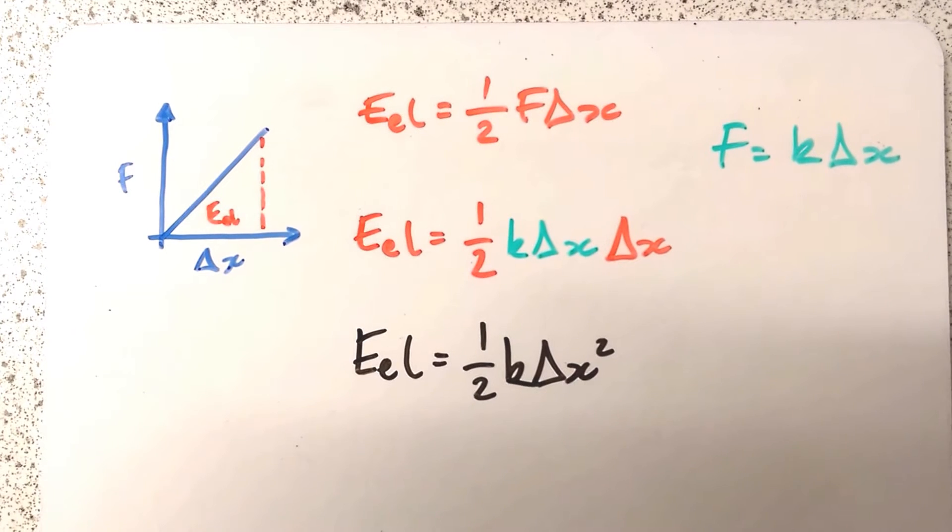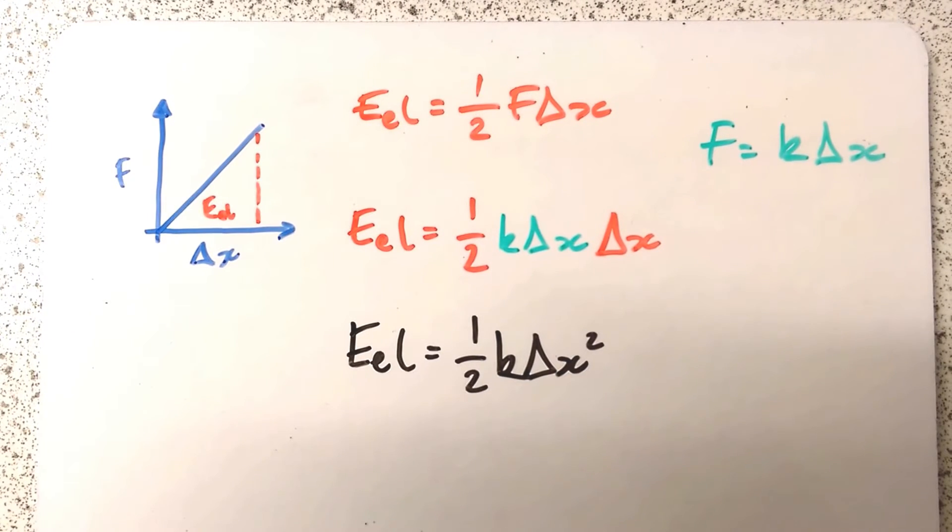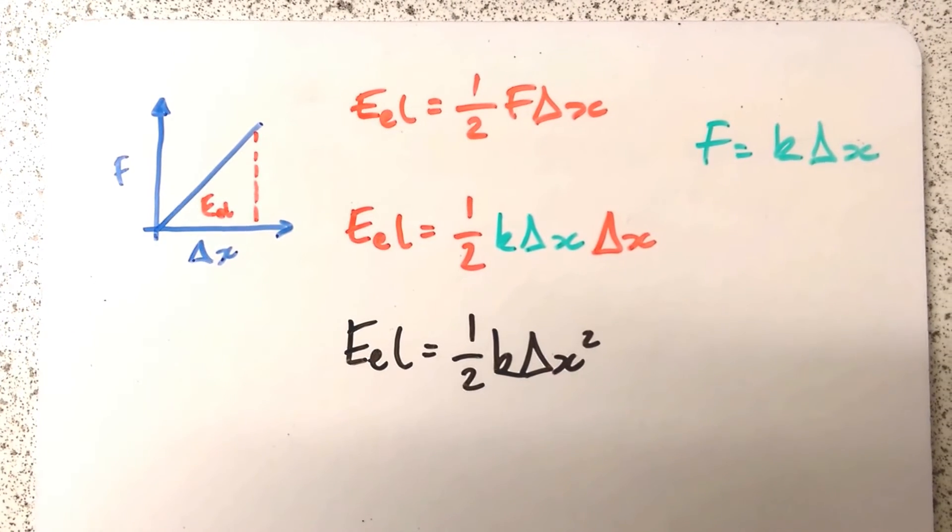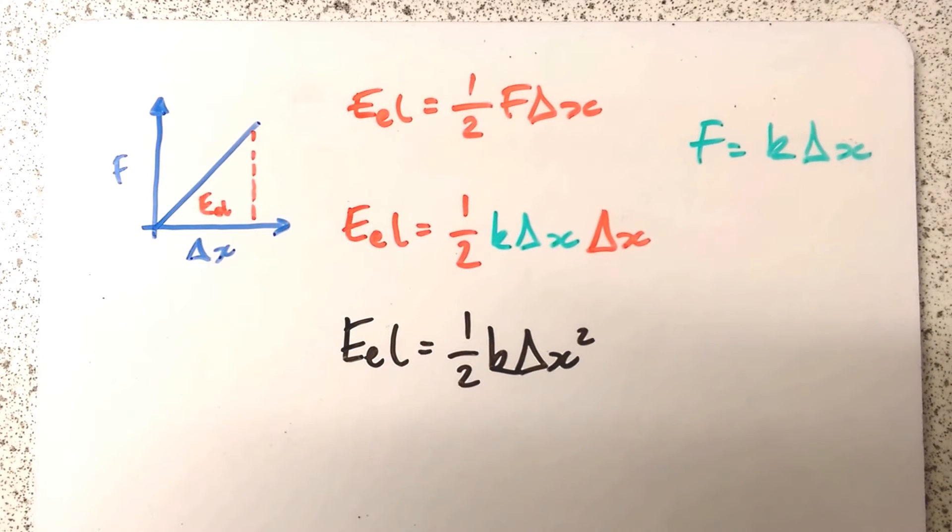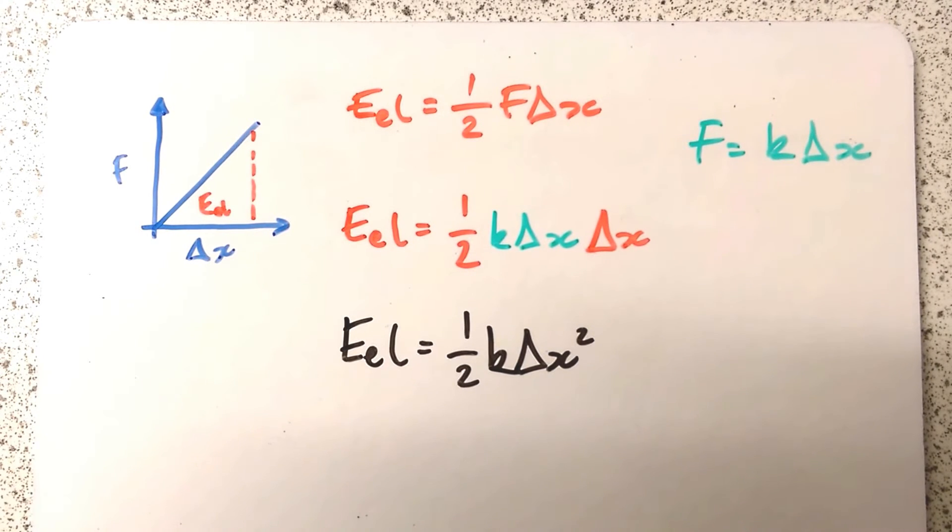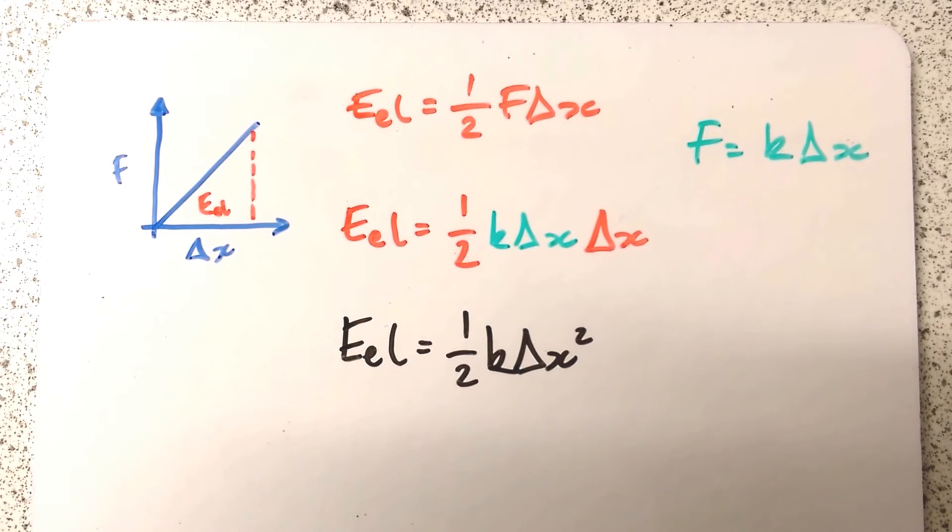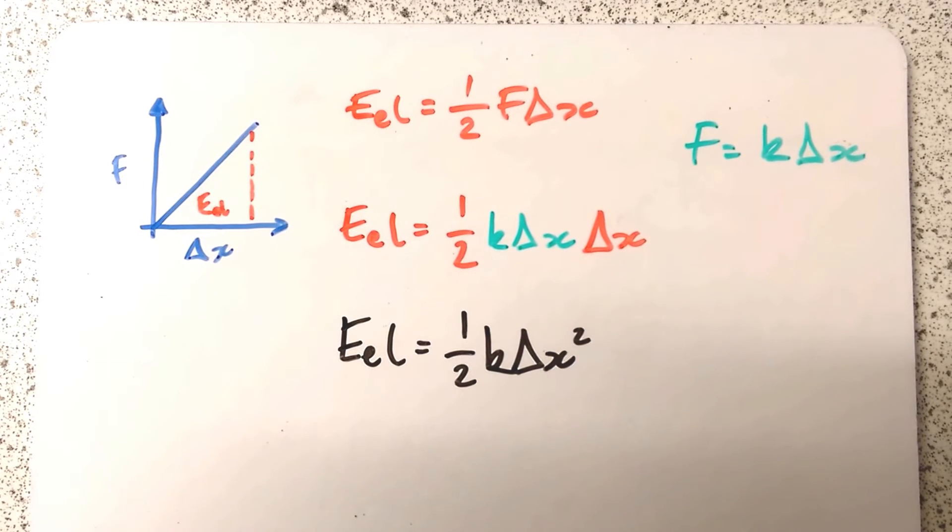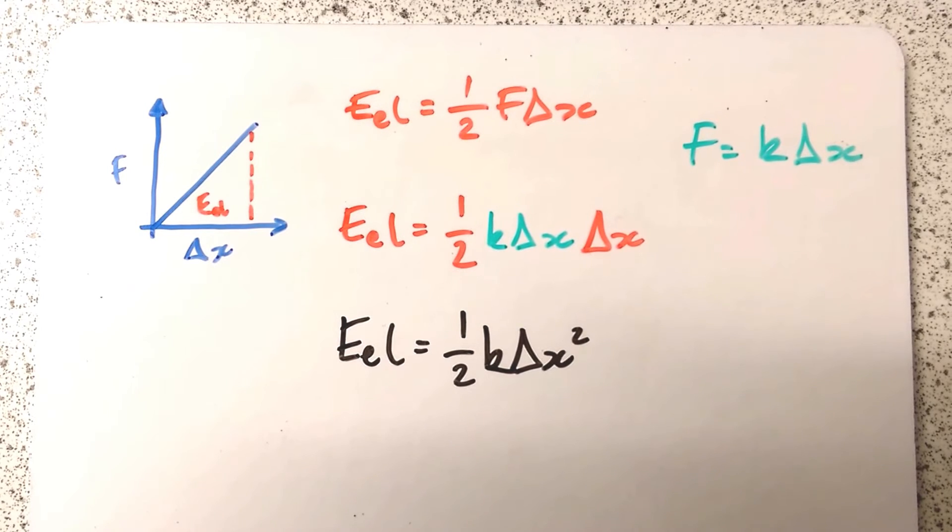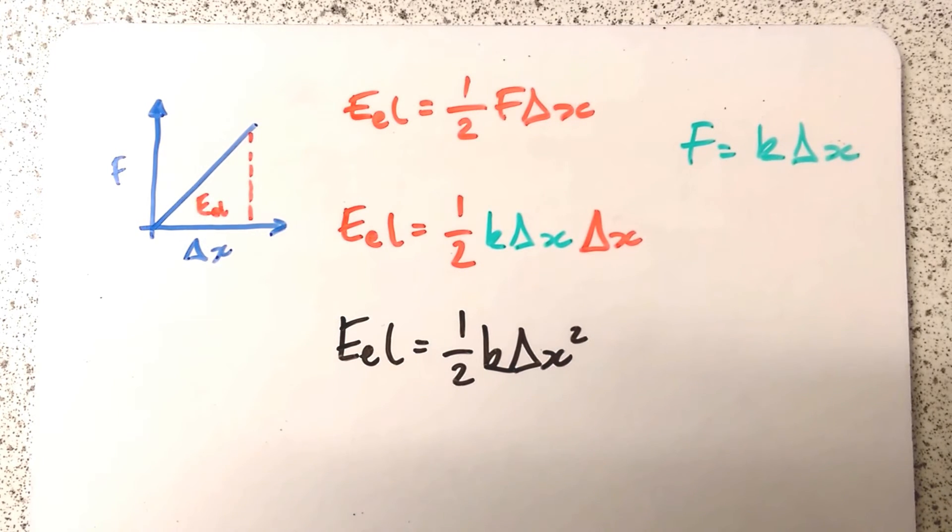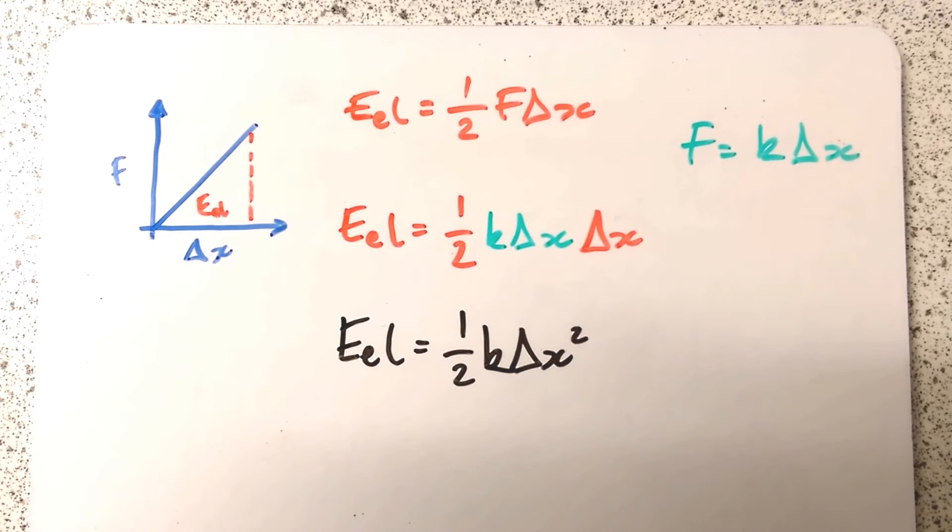We can write an equation for that because if it's a proportional section, it's a triangle. So that's going to be ½ base times height, or ½F times Δx. So the elastic strain energy is ½FΔx. We also know that at any point during that section of the graph, our force is proportional to extension. Hooke's Law, shown in green on the right: F = kΔx.